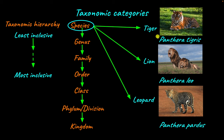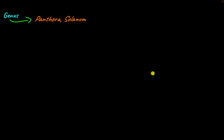Looking at the scientific names for tiger, lion, and leopard: they are Panthera tigris, Panthera leo, and Panthera pardus. The name Panthera signifies the next higher taxonomic rank — the genus. The fact that tiger, lion, and leopard share the genus name Panthera indicates they all belong to the same genus Panthera. A genus is a collection or grouping of closely related species. For plants, Solanum is a common genus which includes species like potato and tomato.